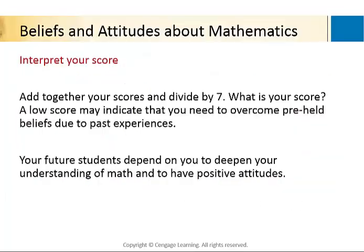So to interpret our scores of course if we just add them up and divide by seven because there were seven questions and see whether we were more in line with a one, two, three or a four. We can decide if our preconceived notions are going to affect how it is that we teach our mathematics and we want that to be positive.